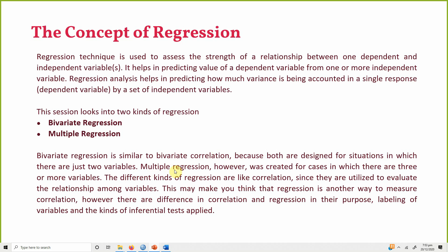Multiple regression, on the other hand, is for cases where there are three or more variables — one of them is the dependent variable while the others are independent variables. Now there are a few differences between correlation and regression analysis.